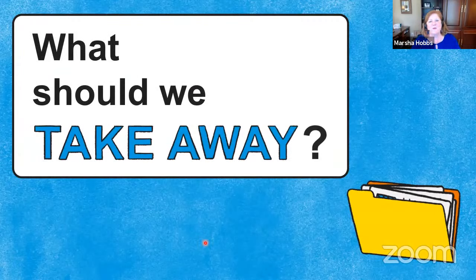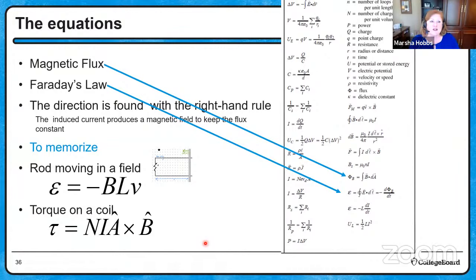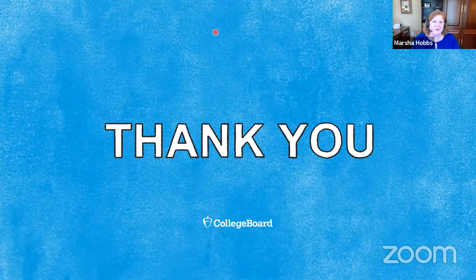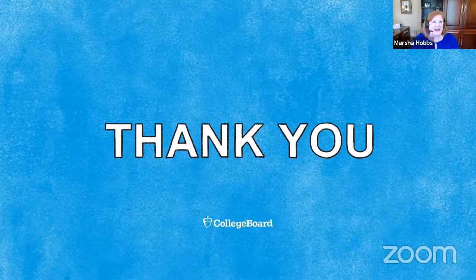What should we take away today? On the equation sheet, we only have two formulas for this material: magnetic flux is the integral of B dot dA, and Faraday's law. You may also want to memorize EMF of a rod moving in a field — BLV — to prepare for the exam. Thank you, and I hope you'll join us back here tomorrow as we discuss inductance.